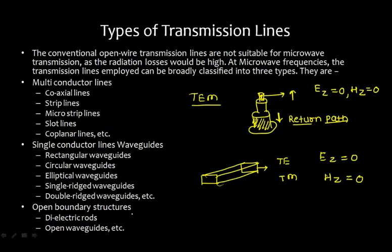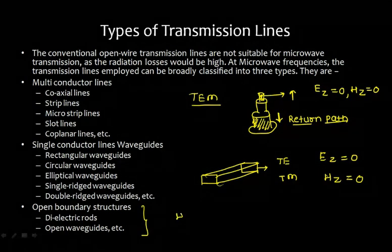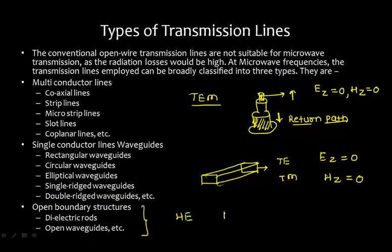For open boundary structures, we won't go into full detail here, but they can support the hybrid mode, where both Ez and Hz are non-zero. This is an overview of the types of transmission lines.